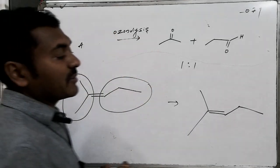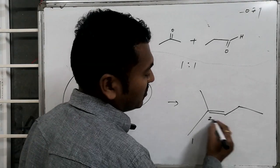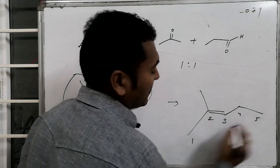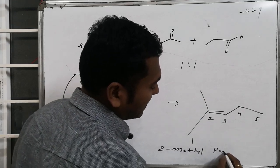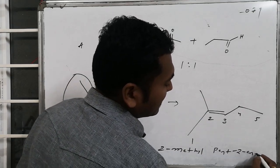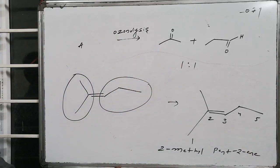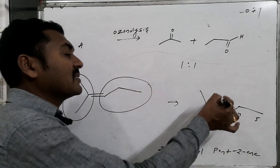The name of the compound becomes 1, 2, 3, 4, 5 - that is 2-methyl-2-pentene. If our starting material is 2-methyl-2-pentene, on reductive ozonolysis this will be broken.